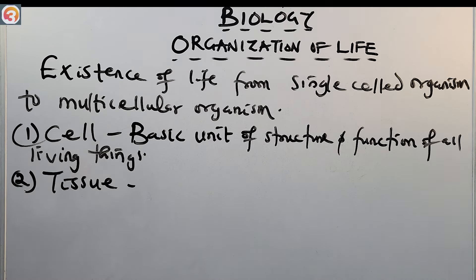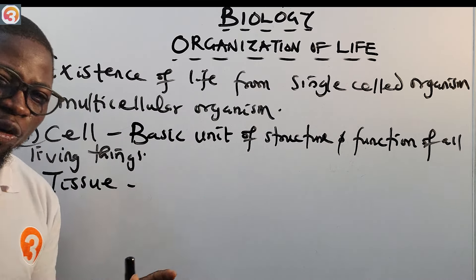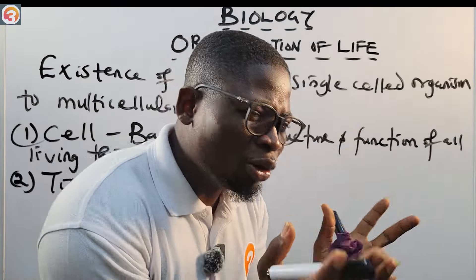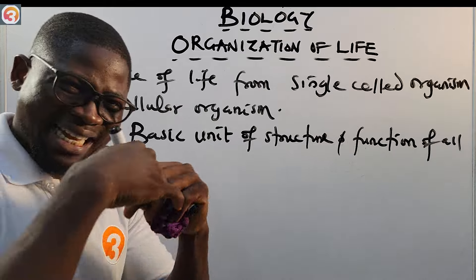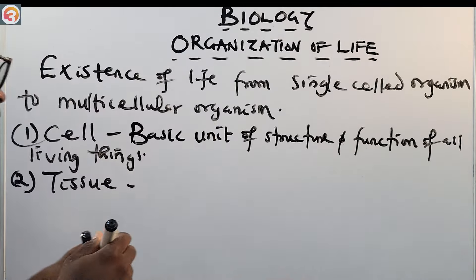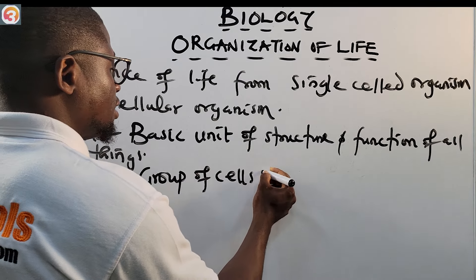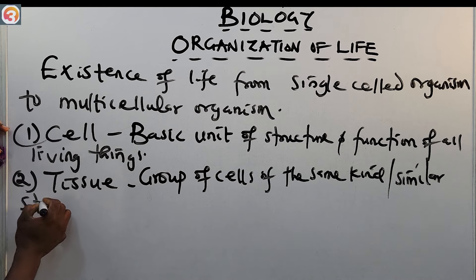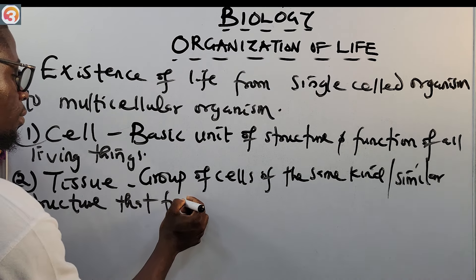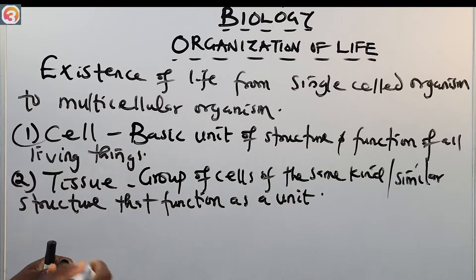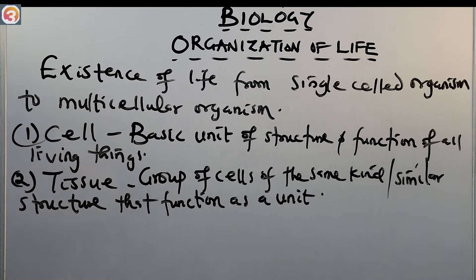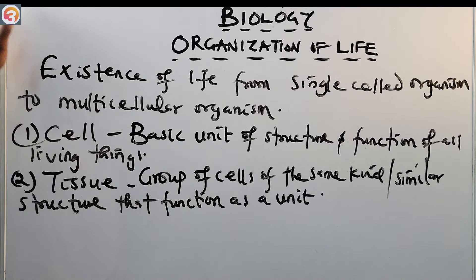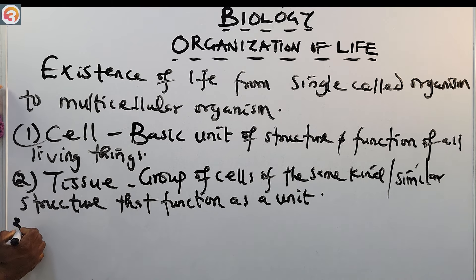Next we go to the tissue. The tissue is a group of similar cells that have similar structure and function, and that function as a unit. So a tissue is a group of cells of the same kind or similar structure that function as a unit. This is the second level in the organization of life.